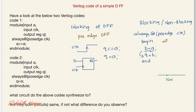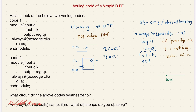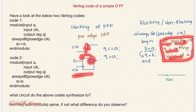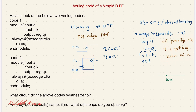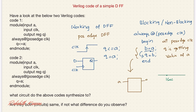So what we can say is: at the positive edge of the clock, q is getting the value of d — similar to the D flip-flop definition where at the positive edge of the clock q gets the value of the input. So this circuit will be synthesized to a D flip-flop with input a and output q, and this is the clock.